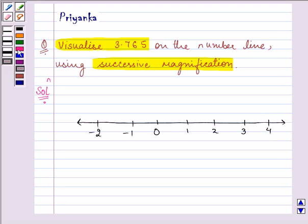Now, we need to visualize 3.765, right? So that means this number will be lying between 3 and 4. Am I right? Okay.